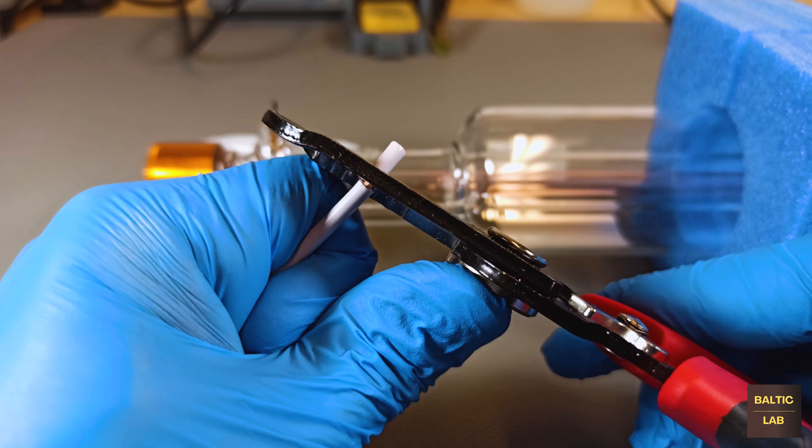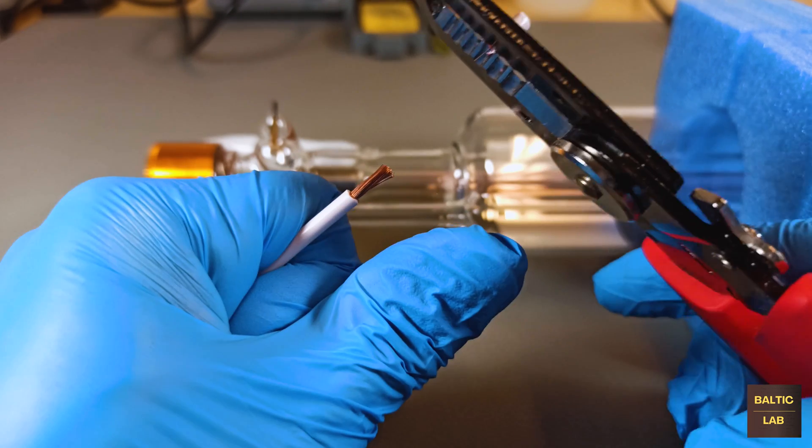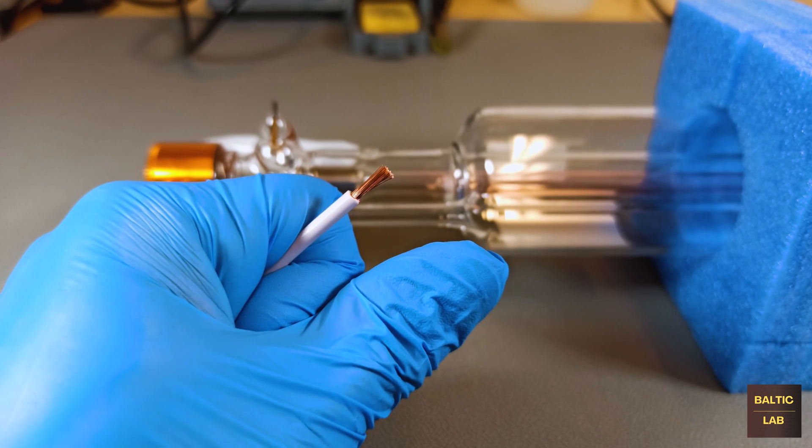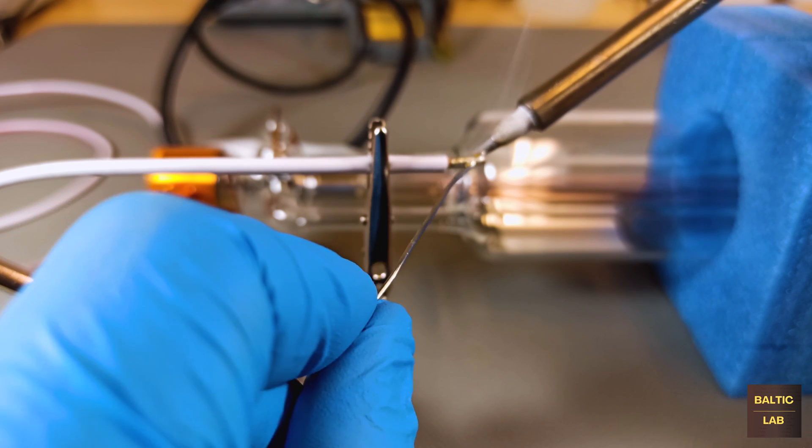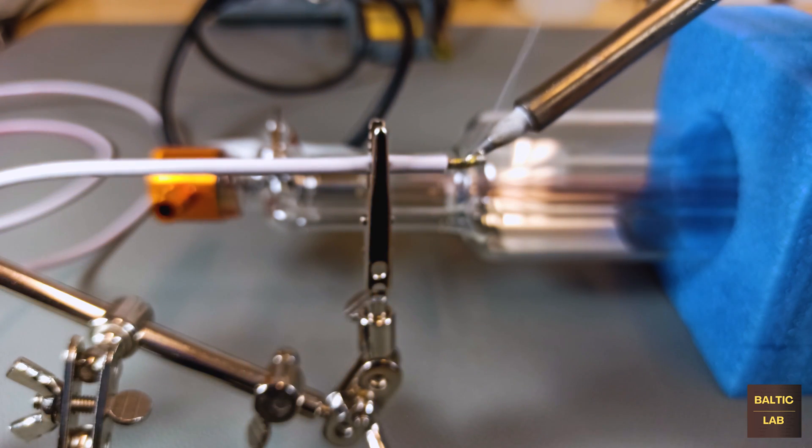At least if you ignore the actual flow of electrons from the negative to the positive side and only consider the way it's usually shown in technical drawings. Meaning the side where the light comes out is the cathode.